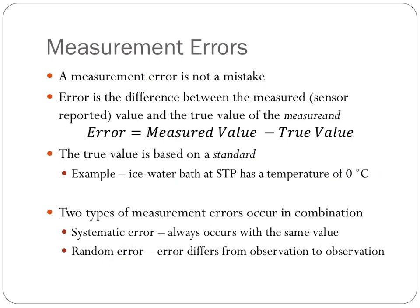A random error, on the other hand, is going to differ from observation to observation. So if I place my temperature measuring device again into my ice water bath, and I read negative two degrees Celsius, one degrees Celsius, negative one degrees Celsius, zero degrees Celsius, three degrees Celsius from observation to observation, I have differences, and therefore that is a random error in our measurement.